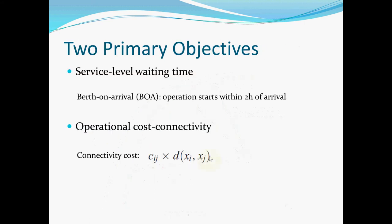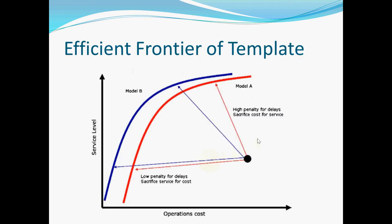Each template would result in a unique model, and each model would have its own efficient frontier. Here we can see that the efficient frontier of model B is better than model A, because at the same operational cost its service level is higher.